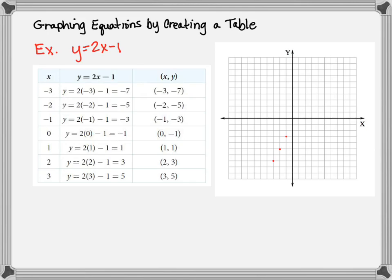So our points are (−1, −1), (1, 1), (2, 3), (3, 5), and we can draw what is here a line — connecting those points with a line.